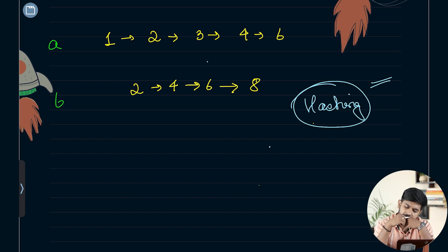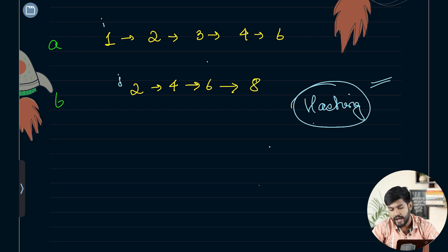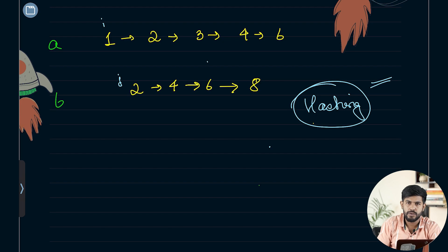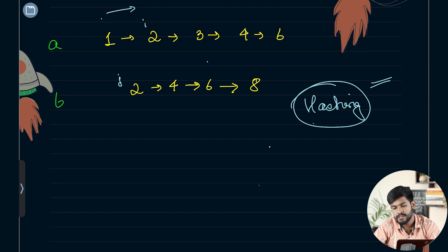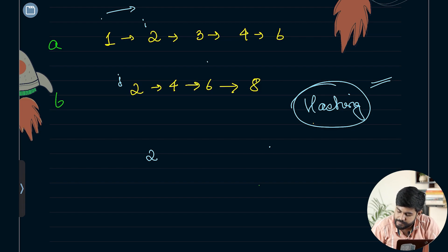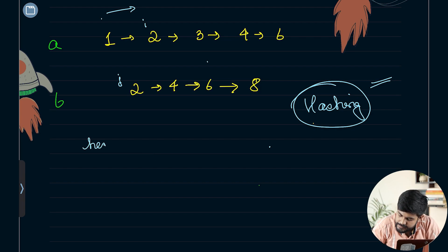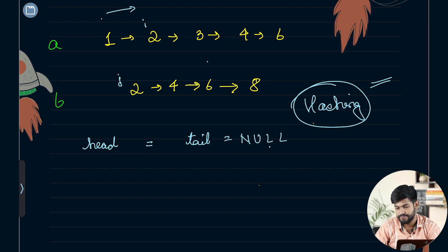What we can do is have a pointer i and a pointer j. Now i is not equal to j, and to have an intersection i should equal j. Since i is less than j (1 is less than 2), we move forward on the right side of i. Now i equals 2. We can't write directly here, so we need to make a new linked list with a head and a tail, both initially pointing to null. At this point we found a match, so head and tail are now equal to 2.